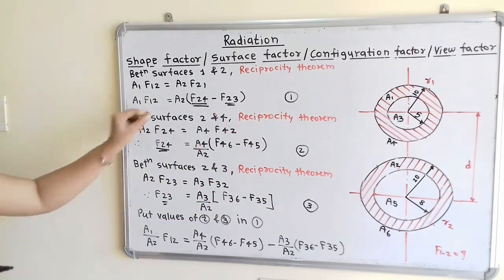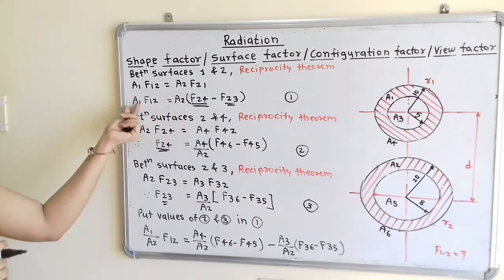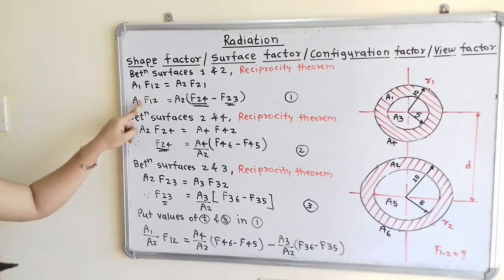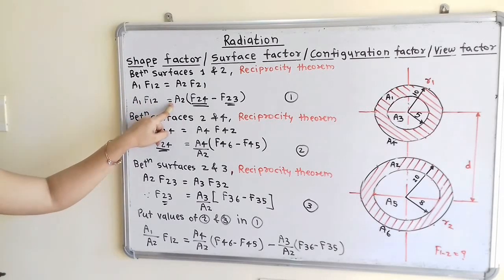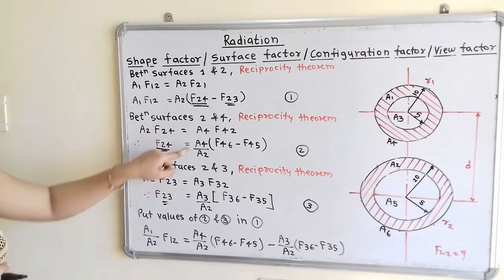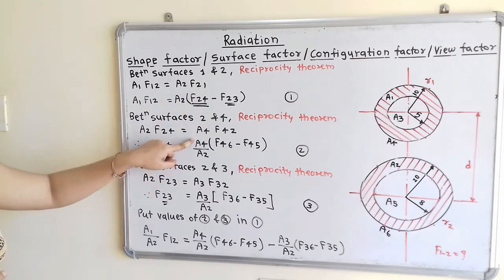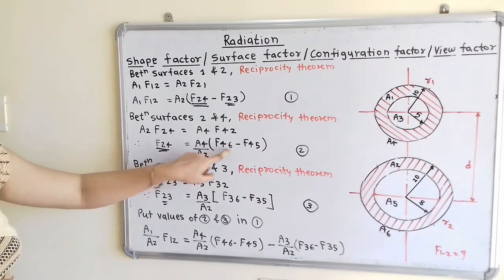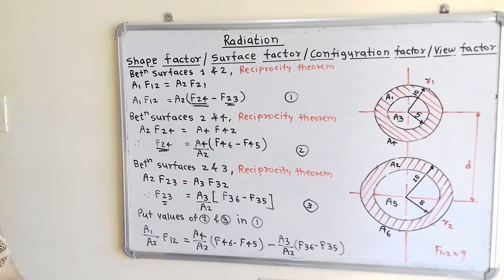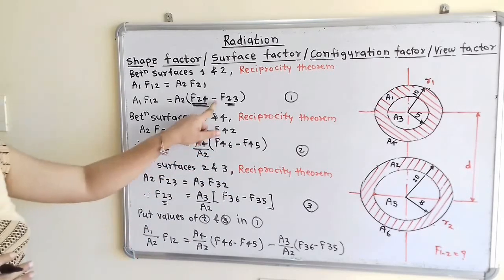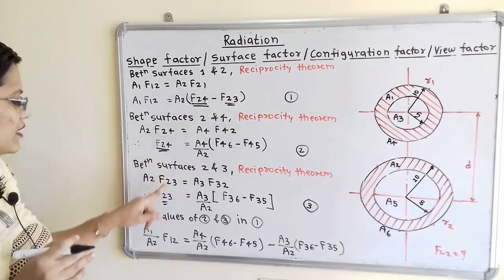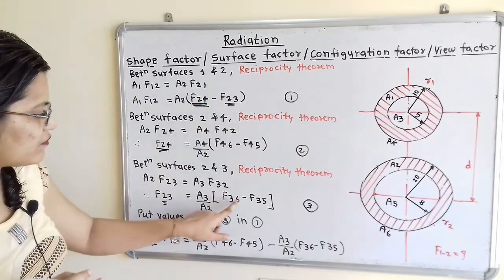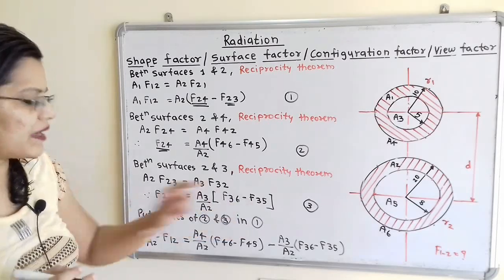Substituting equations 2 and 3 into equation 1, and transferring A2 to the left side: (A1/A2) × F(1→2) = (A4/A2) × [F(4→6) − F(4→5)] − (A3/A2) × [F(3→6) − F(3→5)].